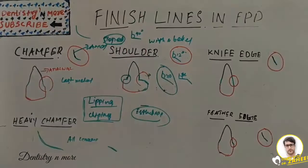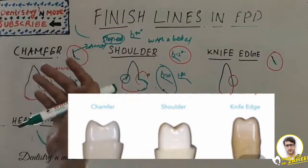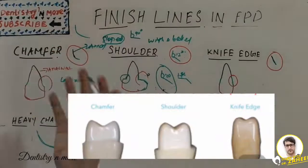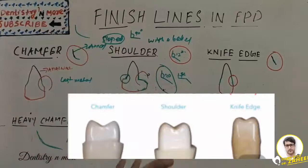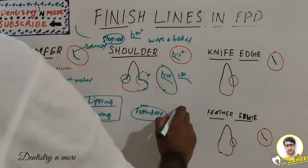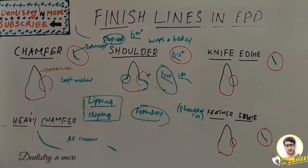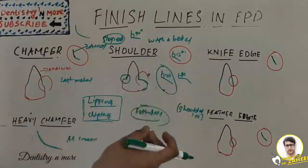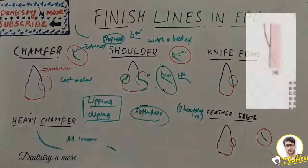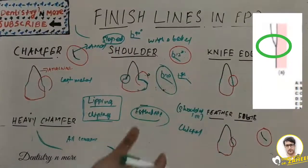Knife edge permits an acute margin of metal with almost no angulation between the axial wall and gingival wall. This thin margin may be difficult for waxing and casting and is susceptible to distortion. It is indicated in mandibular posterior teeth with very convex axial surfaces and lingually tilted lower molars. Feather edge, also known as shoulder-less preparation, is similar to knife edge but marginally thinner. Chisel edge is similar to feather edge but marginally thicker.